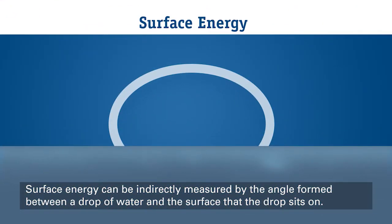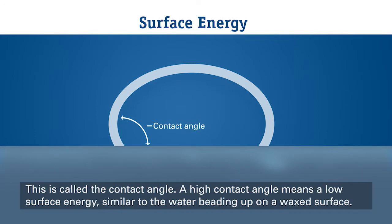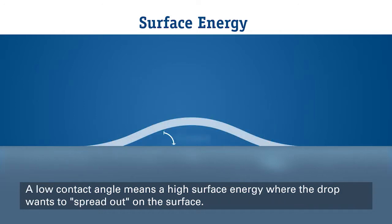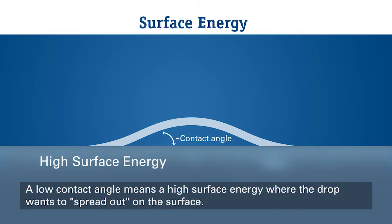Surface energy can be indirectly measured by the angle formed between a drop of water and the surface that the drop sits on. This is called the contact angle. A high contact angle means a low surface energy, similar to the water beading up on a waxed surface. A low contact angle means a high surface energy, where the drop wants to spread out on the surface.